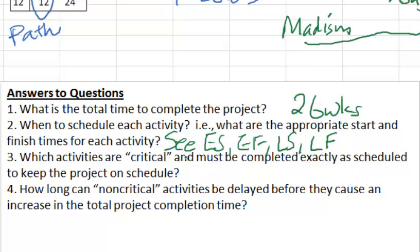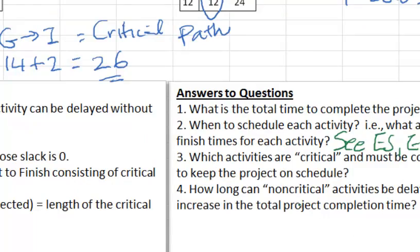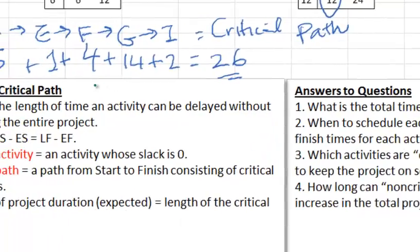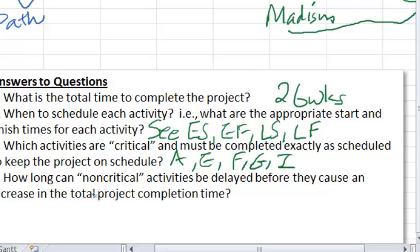Number three, which activities are critical and must be completed exactly as scheduled to keep the project on schedule? That we figured out were A, E, F, G, and I. So A, E, F, G, and I were the critical activities. And how long can non-critical activities be delayed before they cause increase in the total project completion time? These were the slacks. So I would just say see the slacks in the network. So that's the end of this example.